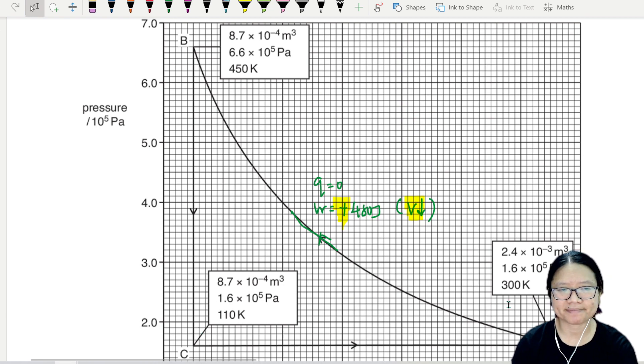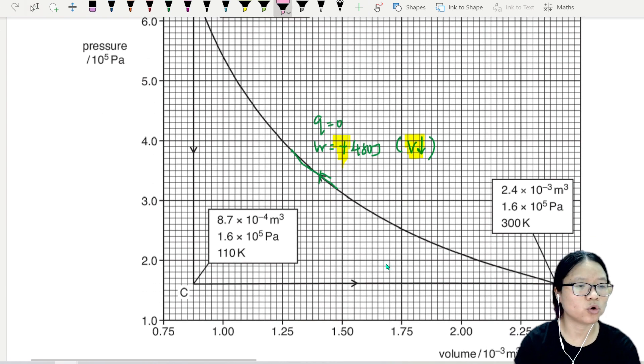So the gas is going to go like this, like this, like this. What I do know is when you go from B to C, w is zero here, but q here is plus or minus 1100.